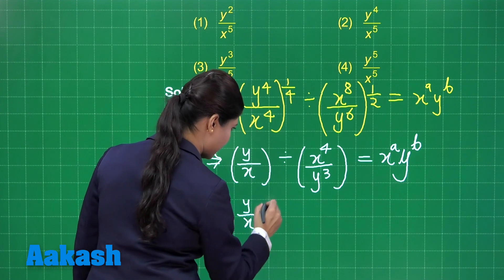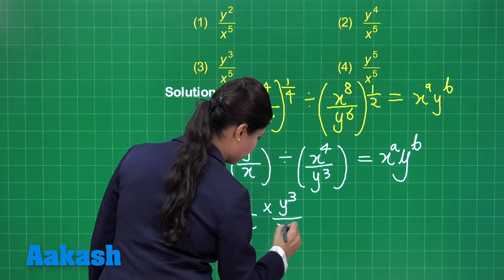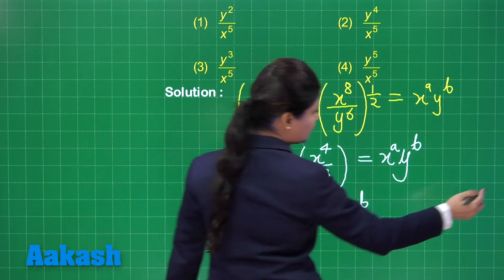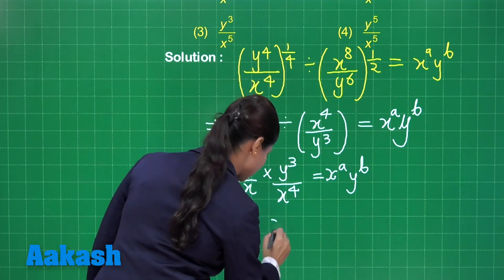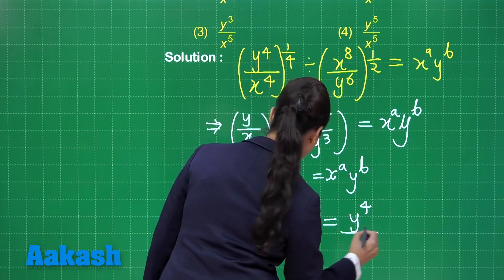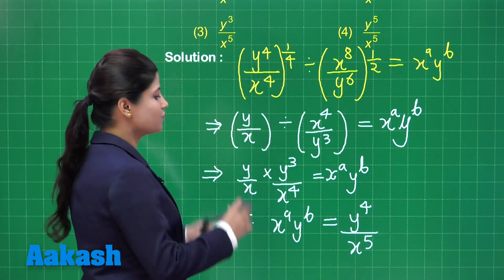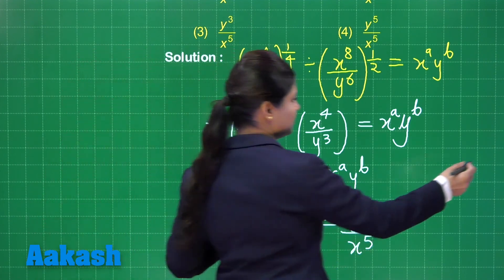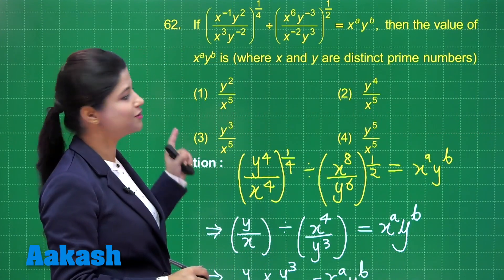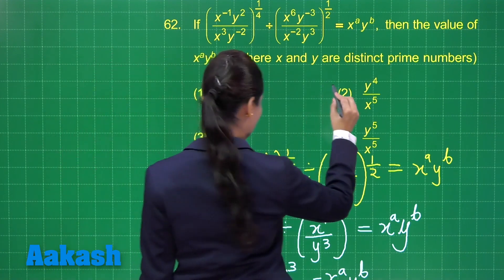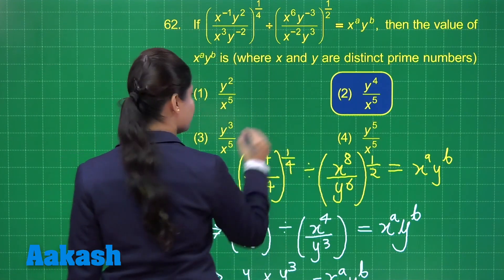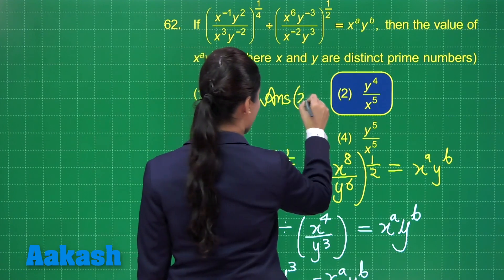I get y upon x into y cube upon x raised to the power 4, which equals x^a · y^b. On simplification, x^a · y^b equals y raised to the power 4 upon x raised to the power 5. Observing all the options, y⁴ upon x⁵ is present in option number 2. So option number 2 is the correct answer for this question.